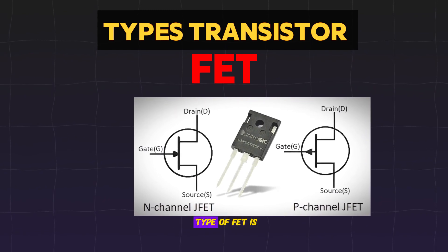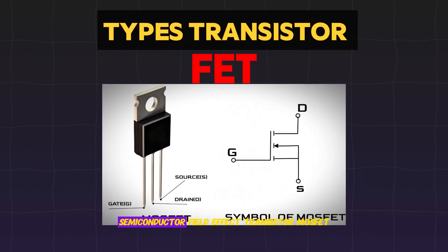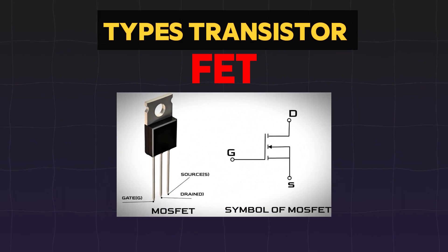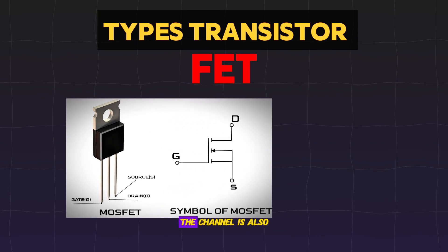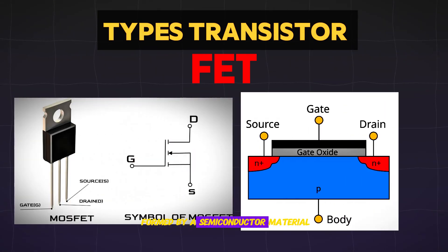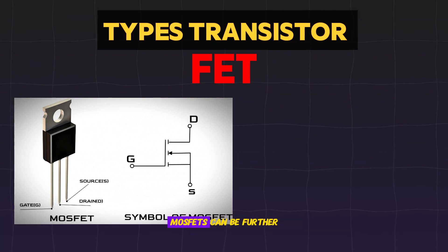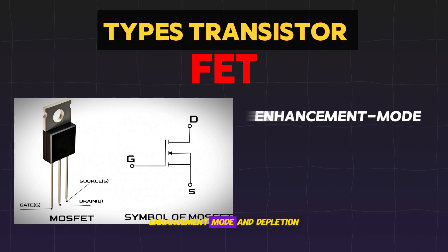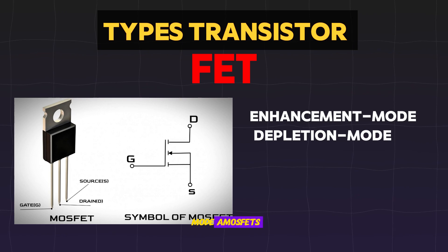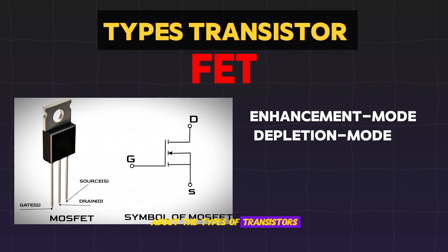The second type of FET is metal oxide semiconductor field effect transistor, MOSFET. Similar to JFETs, in MOSFETs the channel is also formed by a semiconductor material, and it has two regions at either end known as the source and drain terminals. MOSFETs can be further classified into two subtypes: enhancement mode and depletion mode MOSFETs.